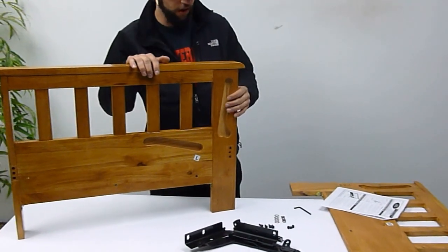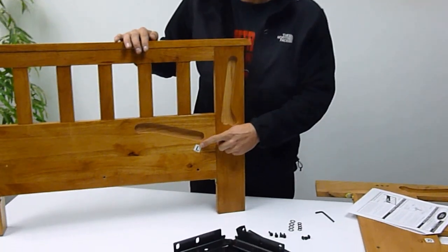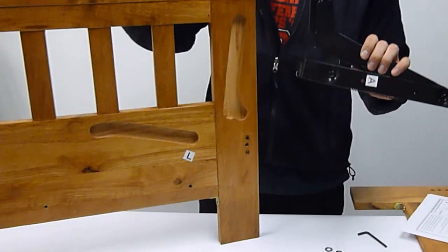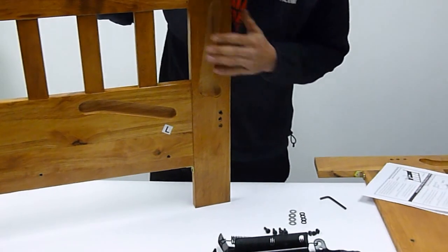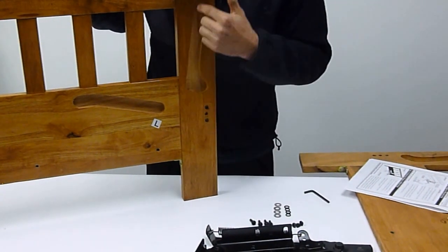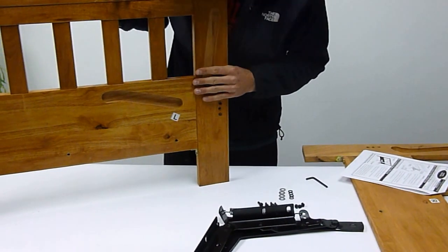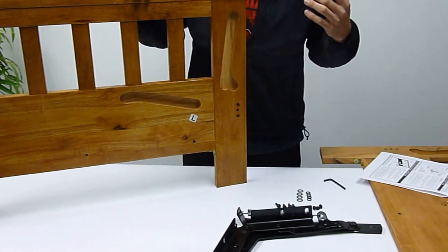Alright, we're going to start with our left arm here. It's labeled L for left. And then we're going to take our A hinge, which is our left hinge, and apply it to it. Where these grooves are on the wooden arms is going to be the back of your futon chair arms. So, wherever these grooves are, that's going to be the back side.